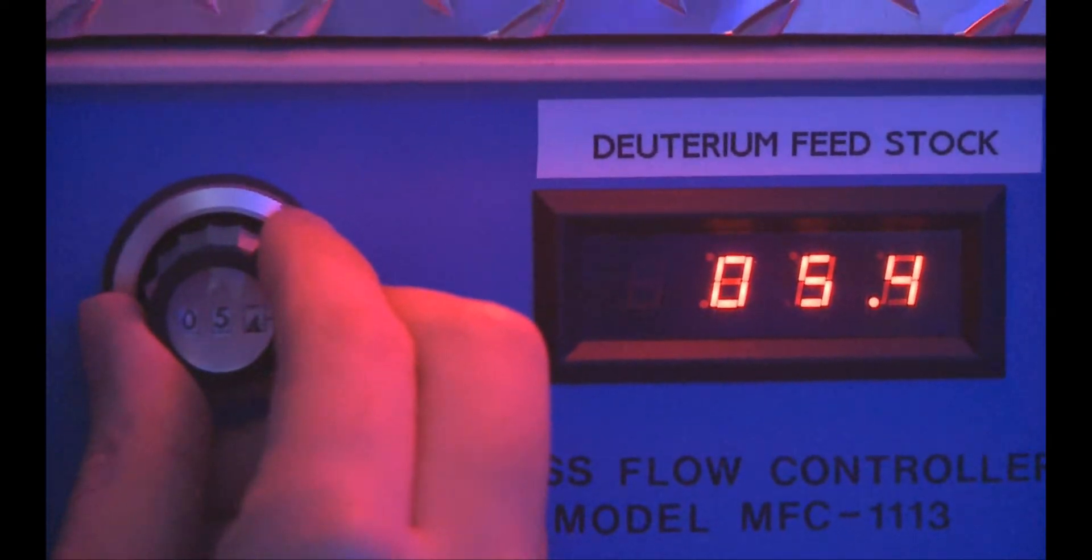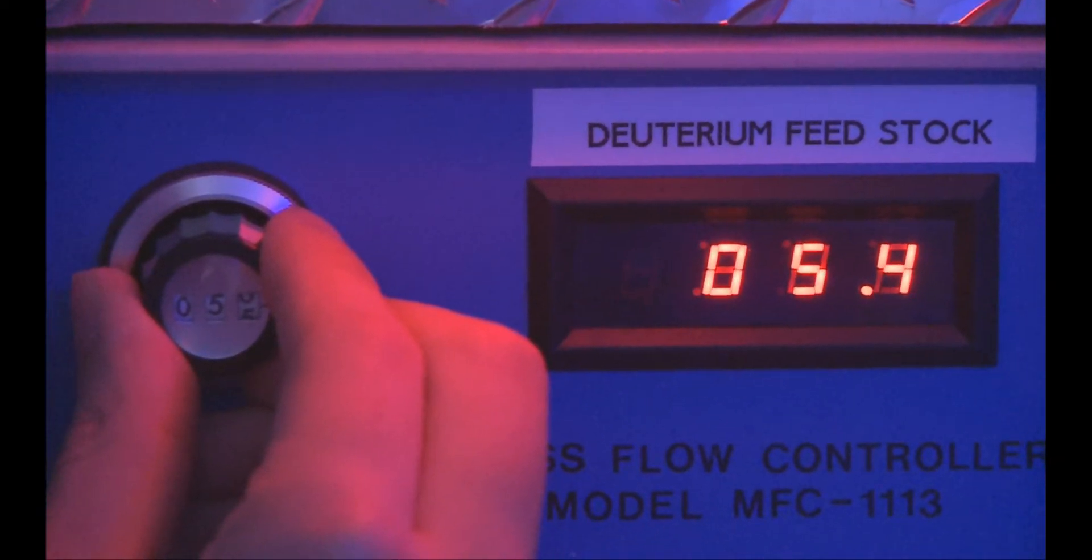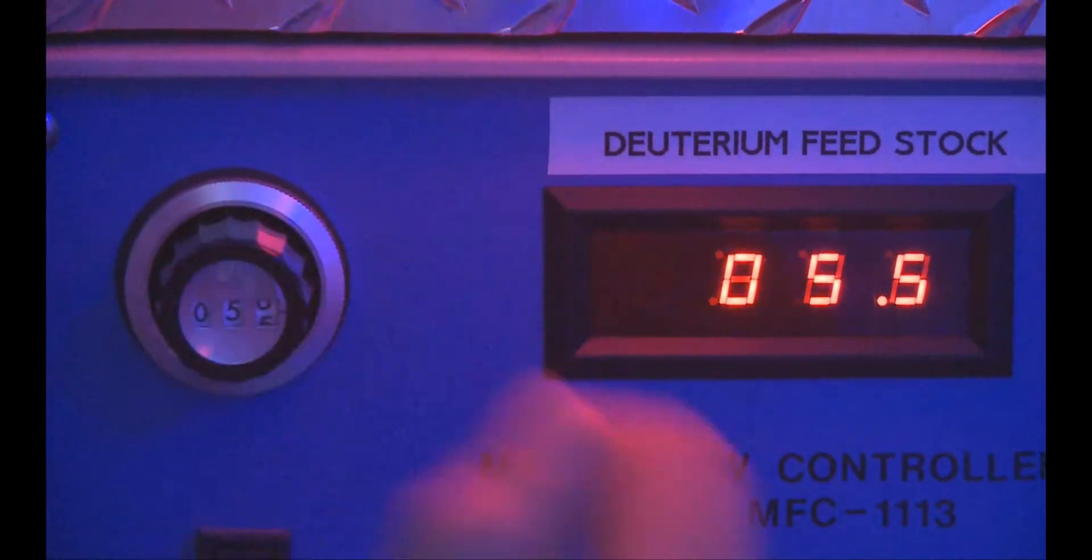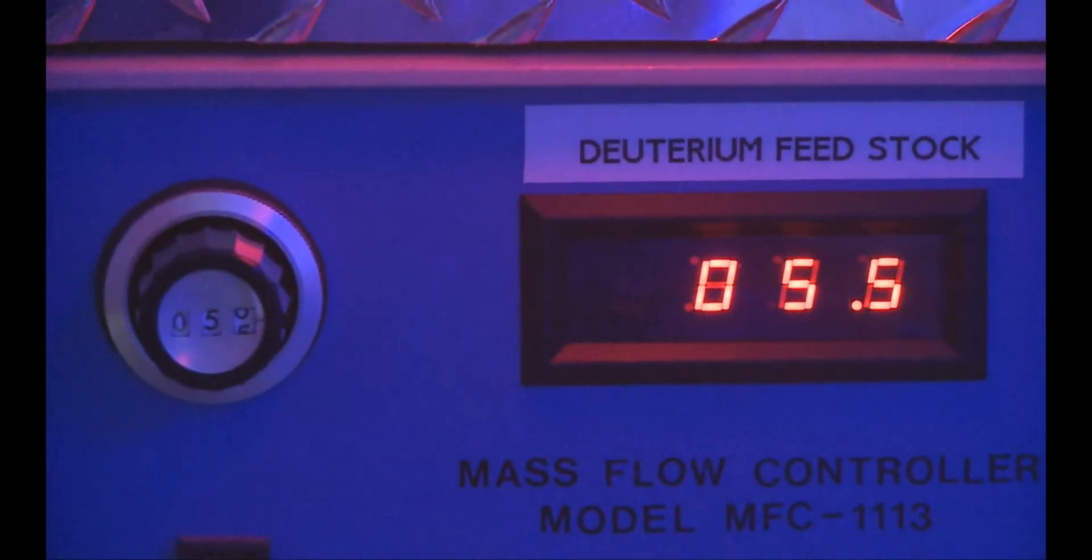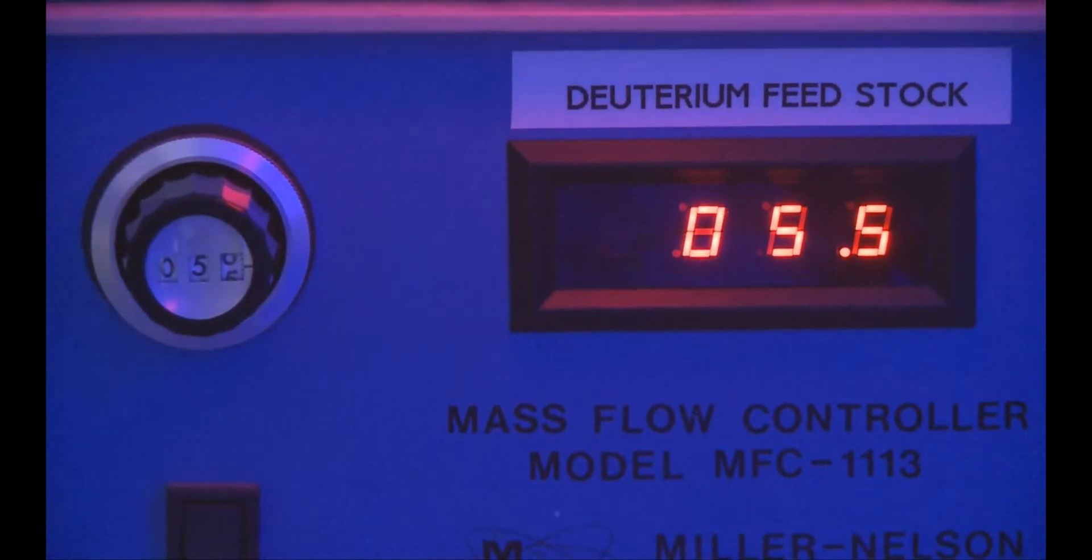The deuterium gas subsystem is comprised of a one-liter bottle of compressed deuterium and regulator connected to a mass flow control valve and metering system.